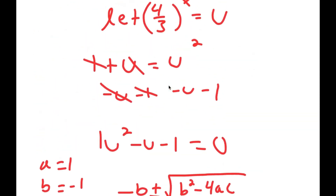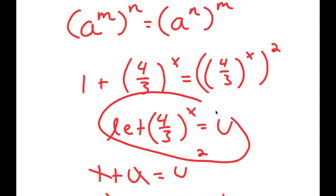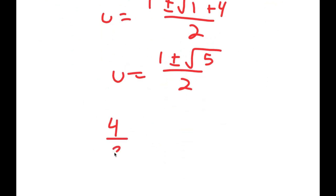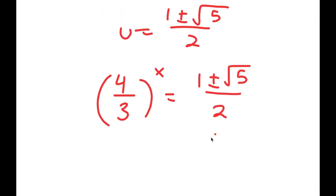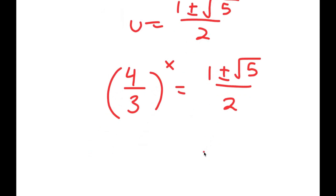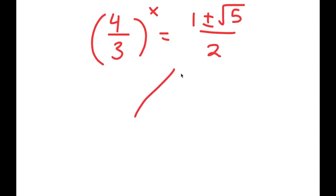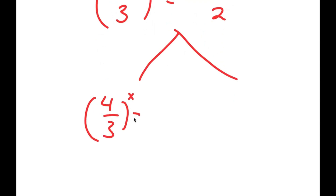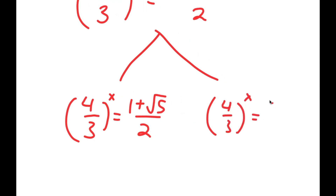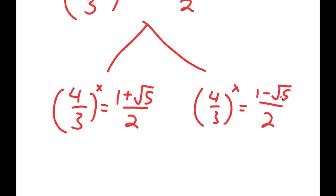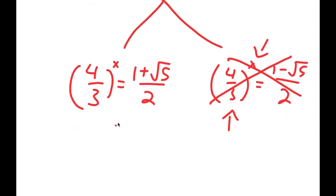Remember we let 4 over 3 to the power of x equal to u. So 4 over 3 to the power of x equals 1 plus or minus the square root of 5 over 2. This gives two equations: 4 over 3 to the power of x equals 1 plus the square root of 5 over 2, or 4 over 3 to the power of x equals 1 minus the square root of 5 over 2. Now 1 minus the square root of 5 is a negative number, and a positive number raised to any power can't equal a negative number, so there's no solution to that equation.